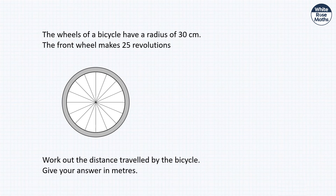The wheels of a bike have a radius of 30 cm. The front wheel makes 25 revolutions — work out the distance travelled in metres. One revolution covers the circumference = 2π × 0.30 m. Distance = 25 × 2π × 0.30 = 15π ≈ 47.1 metres. Note: the expected answer given in the markscheme is 47.1 metres.